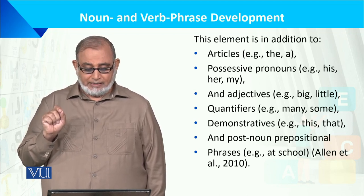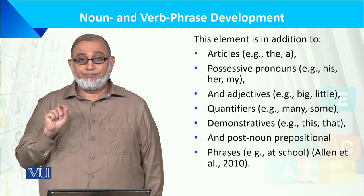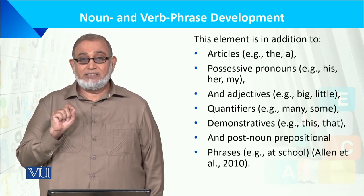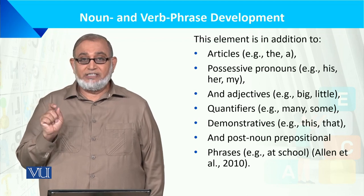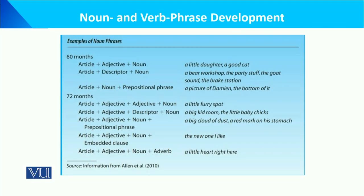Post-noun prepositional phrases also develop. At 60 months, children use structures like: article + adjective + noun — 'a little daughter,' 'good cat' — and article + descriptive noun. Examples include: 'a beer workshop,' 'the party stuff,' 'the goat sound.' Also, article + noun + prepositional phrase — for example, 'a picture of,' 'the bottom of it.'